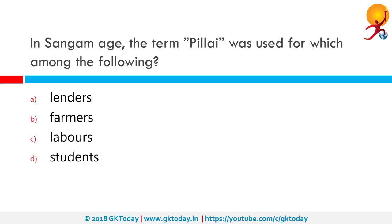In the Sangam age, the term Pillai was used for which among the following? The Sangam period is the period of history of ancient Tamil Nadu and Kerala spanning from 5th century BCE to 3rd century CE. It is named after the famous Sangam academies of poets and scholars centered in the city of Madurai. The term Pillai in modern day Tamil means sun; however, during the Sangam age, it was used to refer to students.